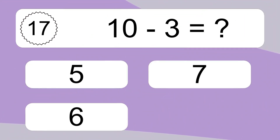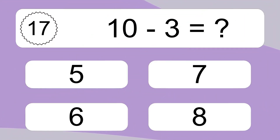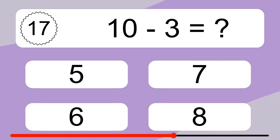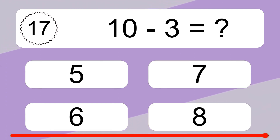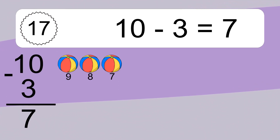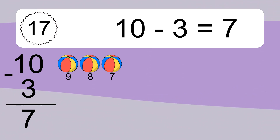10 minus 3 equals what? 10 minus 3 equals 7. Let's count it: 9, 8, 7.